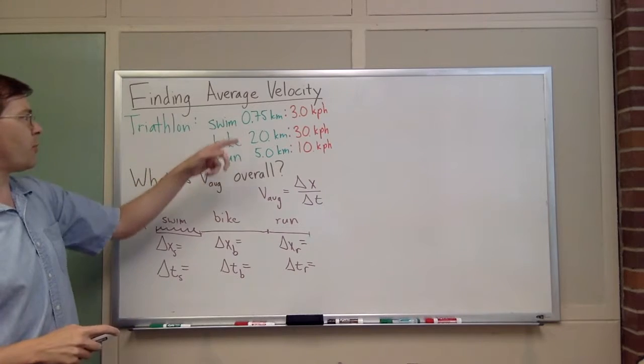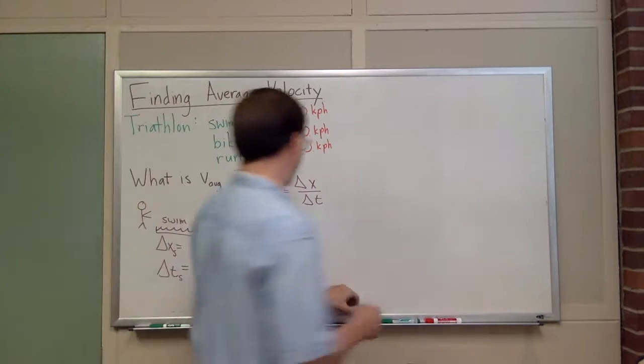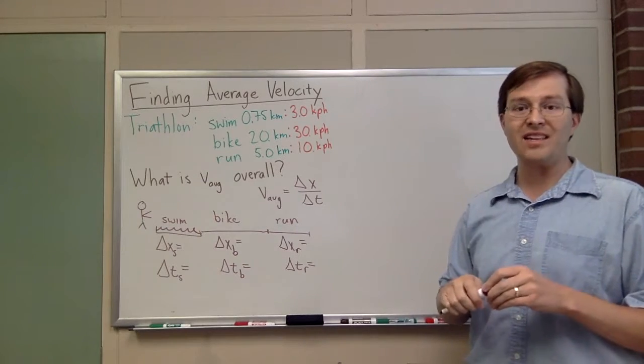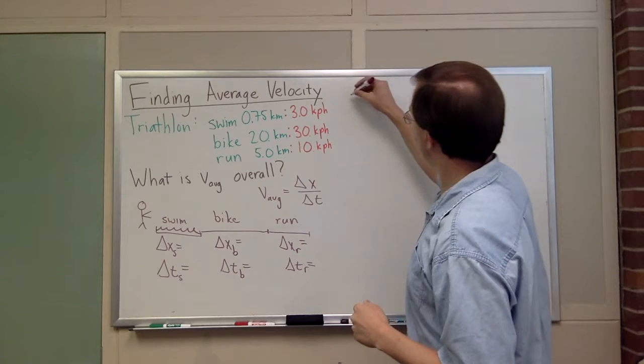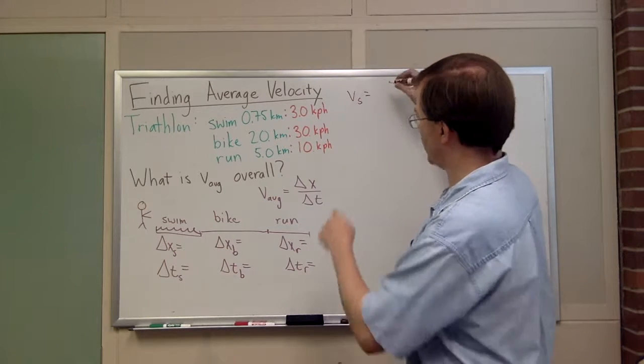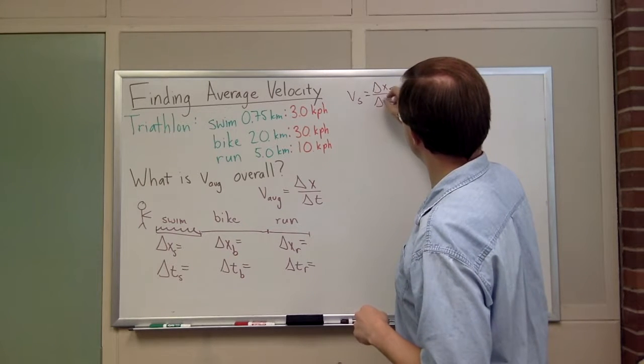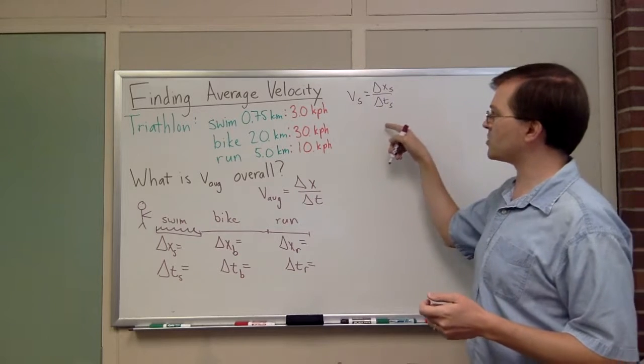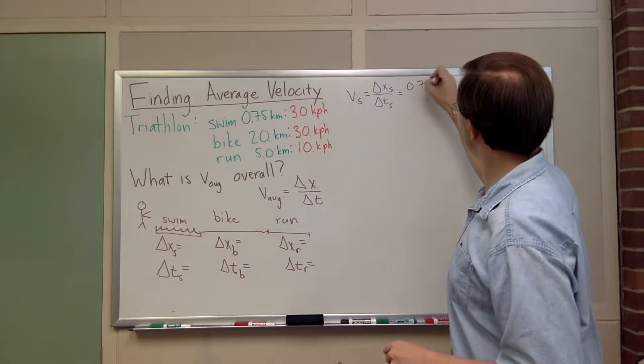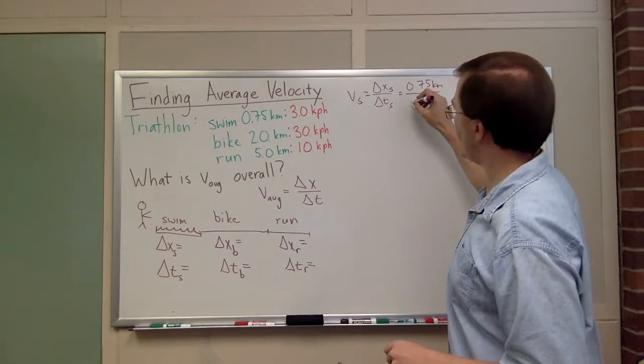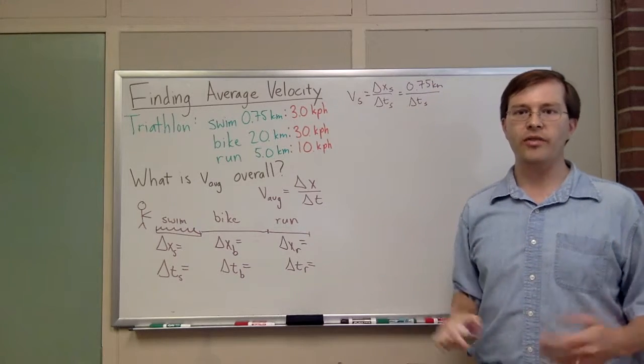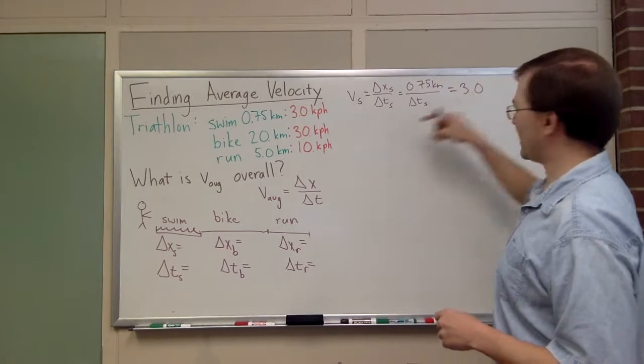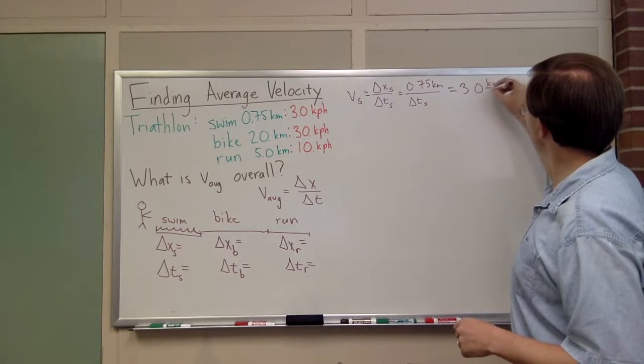Let's start with the swim. We're going to swim 0.75 kilometers at three kilometers per hour. Swimming that speed, I know that three kilometers per hour is in fact its own little v average for the swim. So v swim is equal to delta x swim divided by delta t swim. That's the definition of velocity, and we know our average velocity for the swim is this. Delta x swim I already know is 0.75 kilometers divided by this unknown delta t swim. So I've got to figure that out, but I know that's going to be equal to 3.0 kilometers per hour.